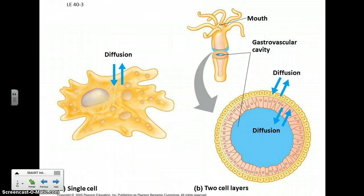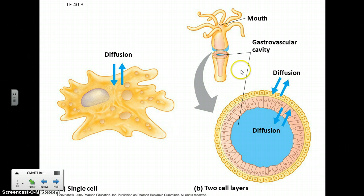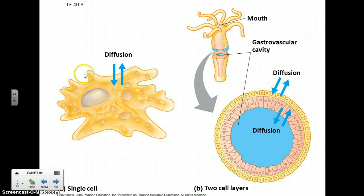Because all living things need to do the same basic things, whether you're a single-celled amoeba or a multi-celled animal like this hydra here. Your cells all need to take in materials and get rid of materials. Of course the amoeba does that with its immediate surroundings, and these single-celled protists have actually quite complex cells because of their need to do everything.